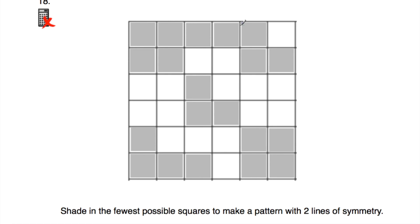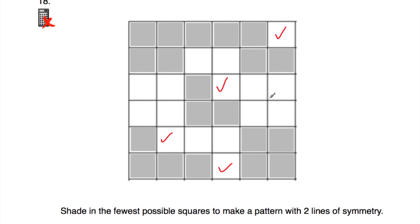Question number 18: we've got a grid with some squares shaded and need to shade the fewest possible squares to make a pattern with two lines of symmetry. Using vertical and horizontal lines of symmetry, we shade in four squares. The pattern then has a vertical line of symmetry and a horizontal line of symmetry — that's the fewest possible squares to shade in to achieve two lines of symmetry.